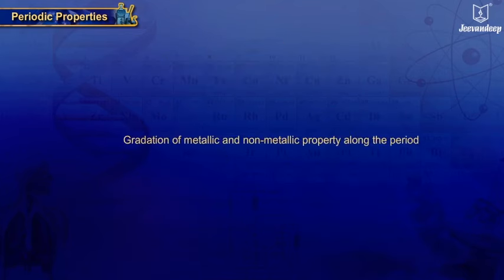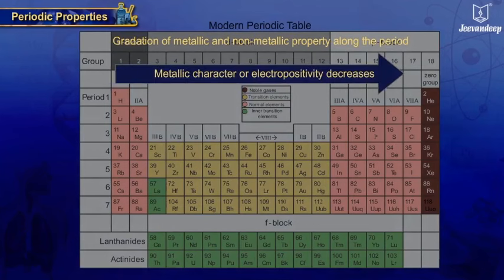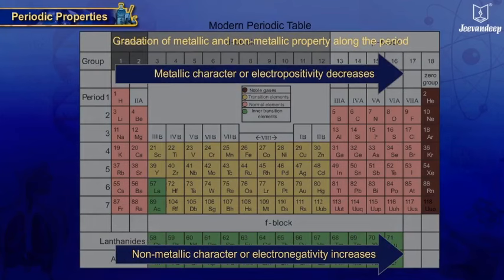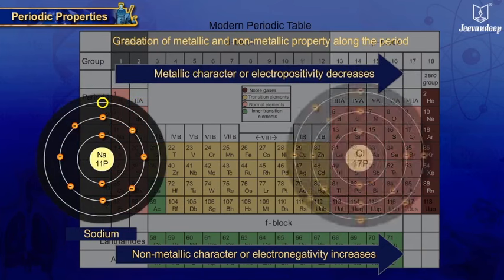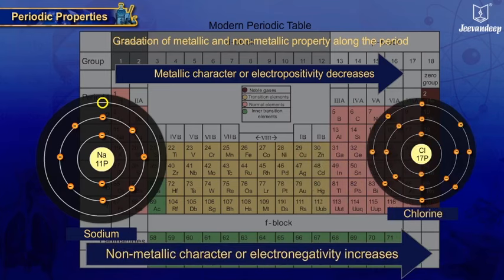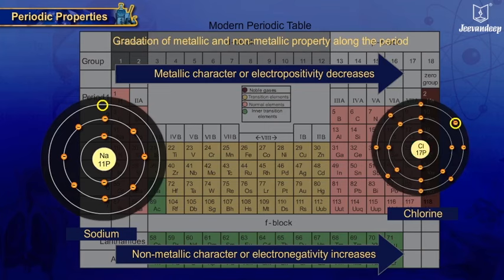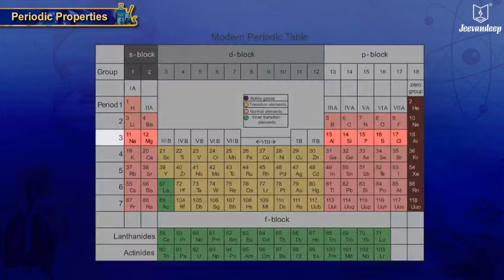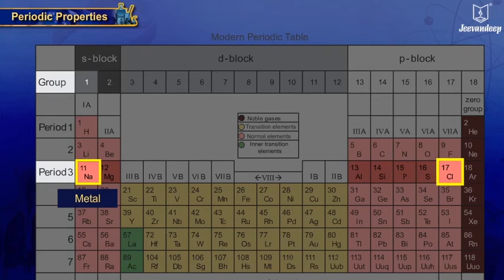Gradation of metallic and non-metallic properties along the period: metallic character decreases and non-metallic character increases from left to right in a period, i.e. tendency to lose electrons — electropositivity — decreases, and tendency to gain electrons — electronegativity — increases, because of decrease in atomic size and a more powerful nucleus. For example, sodium positioned in the third period, first group, is a metal, whereas chlorine positioned in the third — i.e. the same — period but the 17th group is a non-metal.